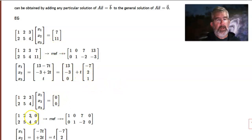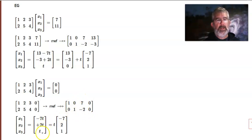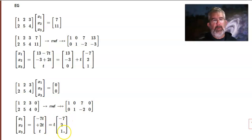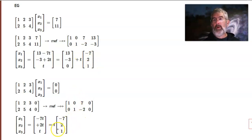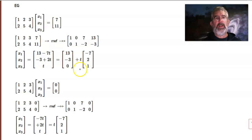Now look at the corresponding homogeneous system. Make the augmented matrix and put it in reduced row echelon form. The reduced form looks like the previous one, except with zeros on the right. When I solve for the variables, I still have a free variable x3, so that's t, then x2 is 2t and x1 is minus 7t. This describes the general solution to the homogeneous system — a line through the origin in the direction of that vector. For the non-homogeneous system, it's that same direction plus the particular solution 13, negative 3, 0.